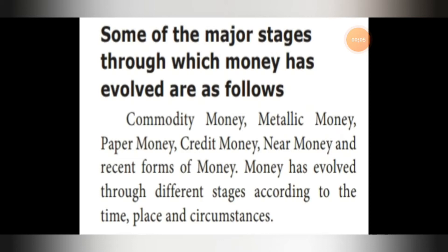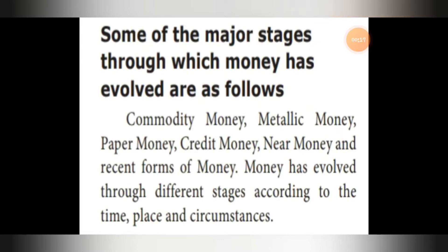Welcome back to Social Security Students, where we are going to see the second class in economics: money, savings and investment. Last class we stopped here. We saw the major stages through which money has evolved: commodity money, metallic money, paper money, credit money, near money, and recent forms of money. We are going to see these in detail today. Money has evolved through different stages according to time, place, and circumstances.